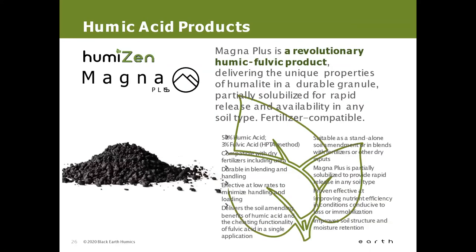And lastly, we've got the Humizen Magna Plus, the revolutionary humic fulvic product delivering unique properties of humalite in a durable, fertilizer-compatible granule. It's partially soluble for rapid release and availability in any soil type. Effective at low rates, it delivers the soil-amending benefits of humic acid and the chelating functionality of fulvic in one single application. It is compatible with dry fertilizers including urea, so it can be incorporated into a blend or used as a standalone application. It's suitable for broadcasting as well as in-furrow.